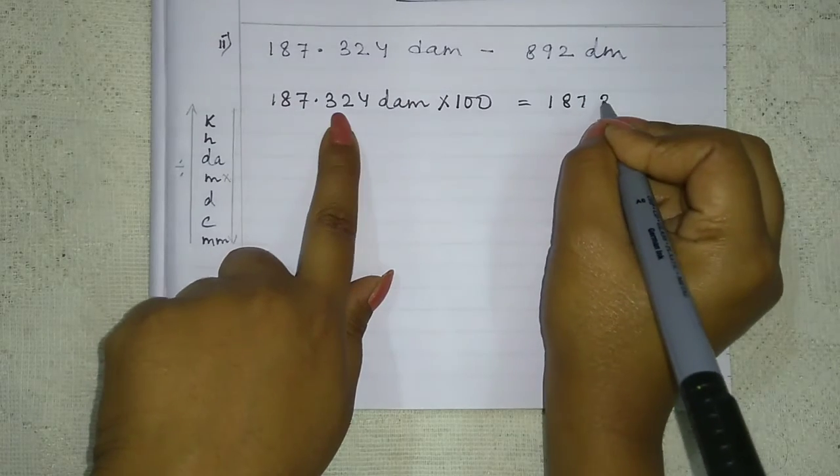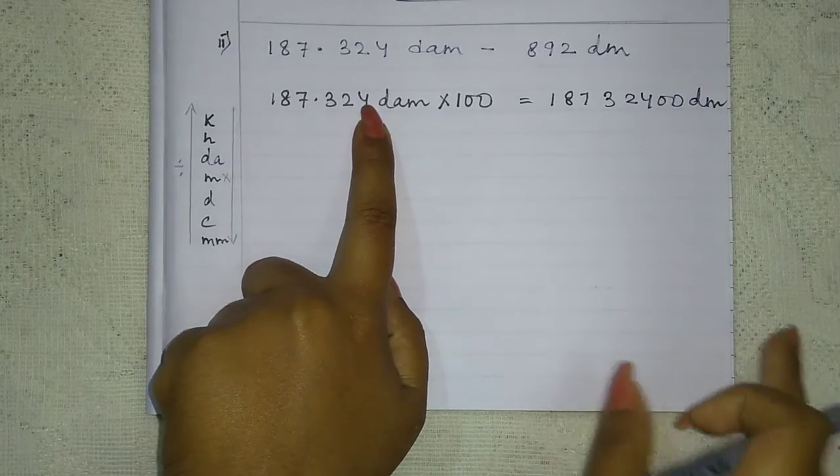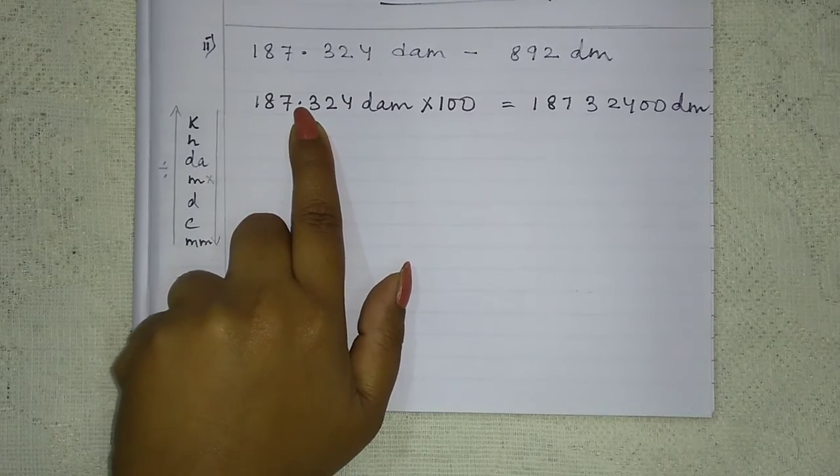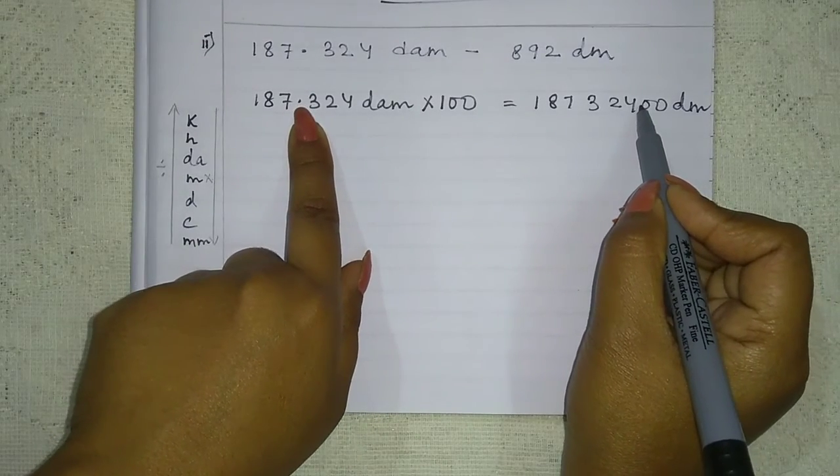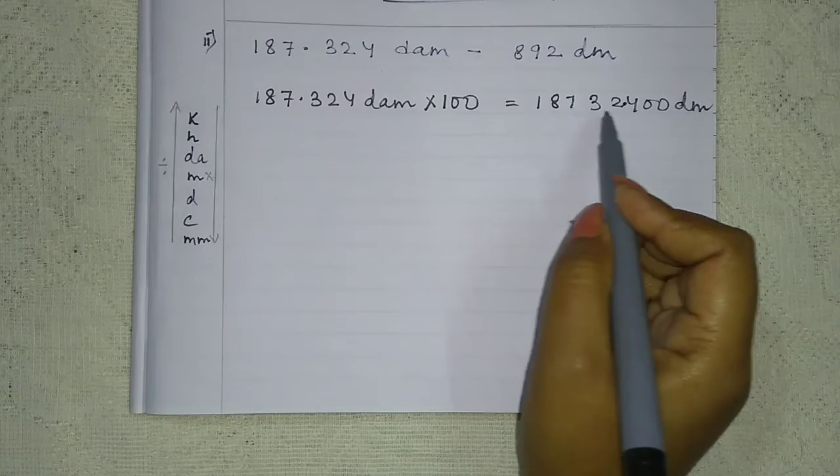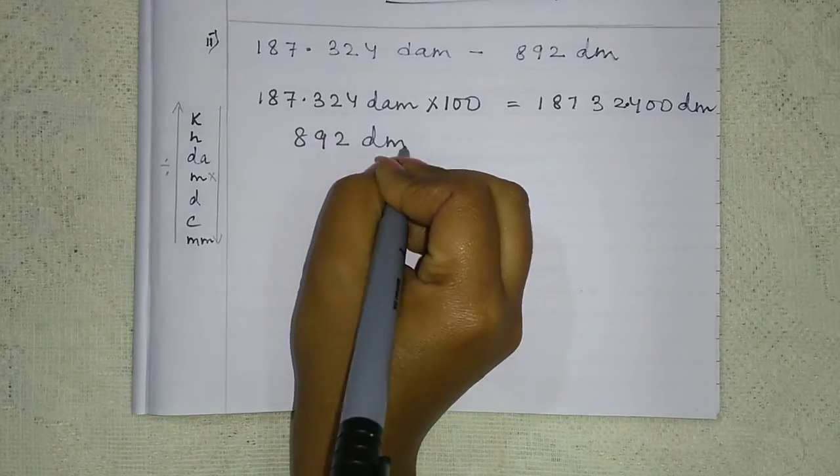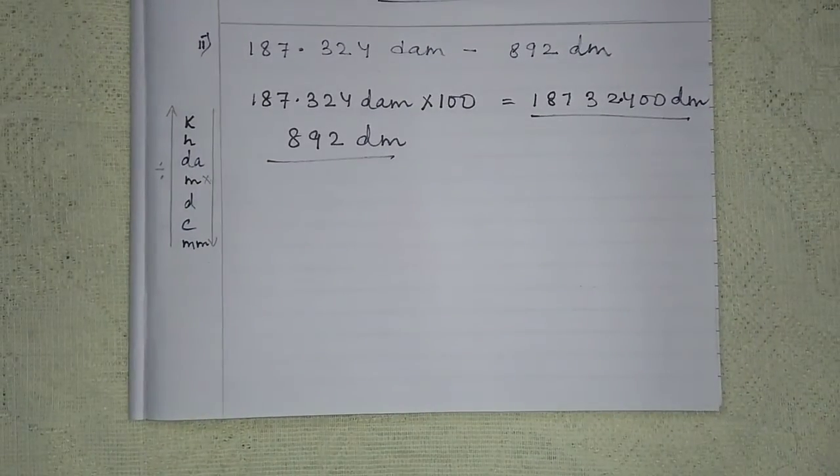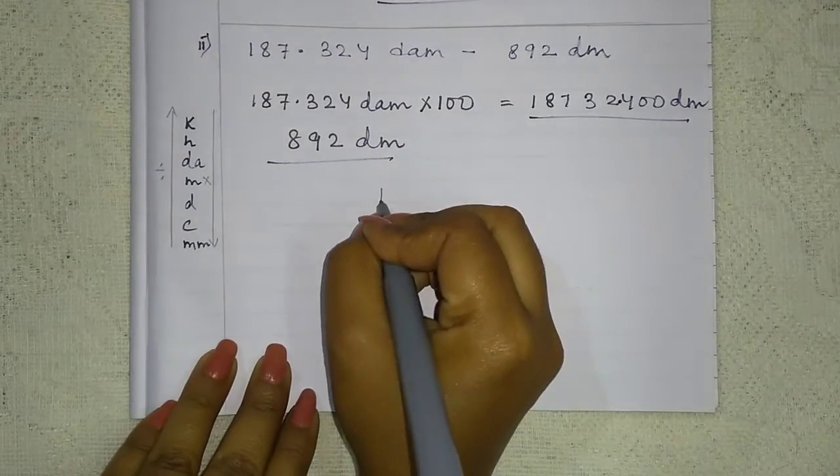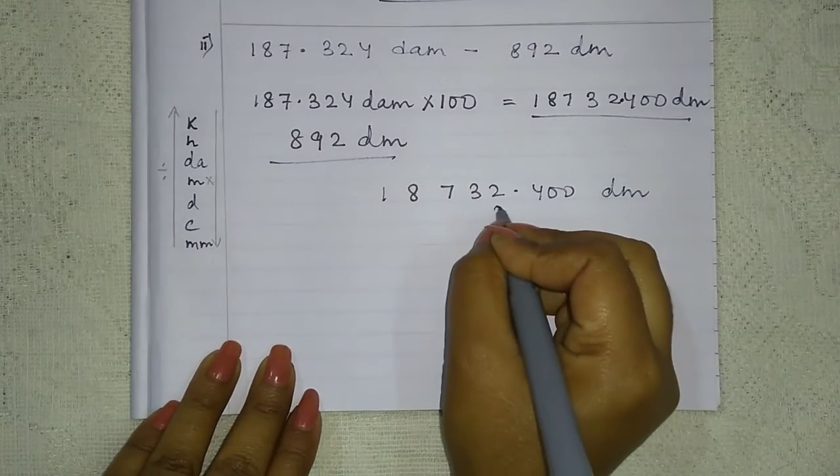So we will get 187.324 times 100 equals 18732.40 decimeter. And the second value is already 892 decimeter.